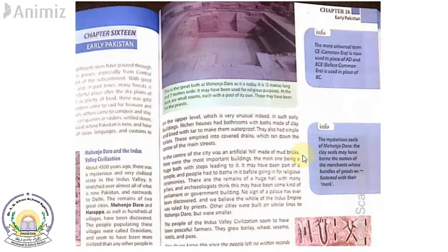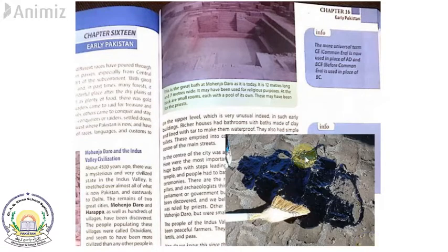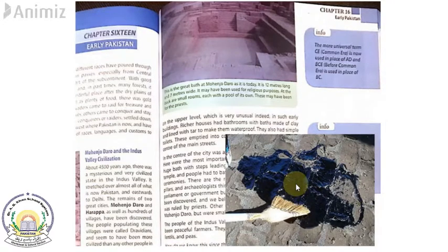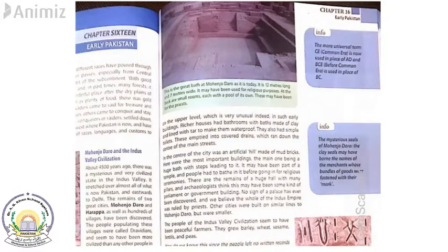The baths were made of clay, and lined with tar to make them waterproof. Tar is the black liquid commonly used in roads today — it is a very thick substance used to waterproof surfaces.